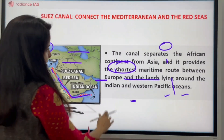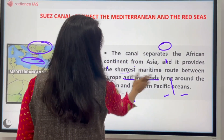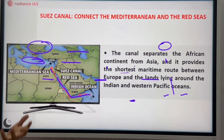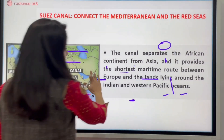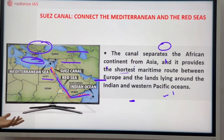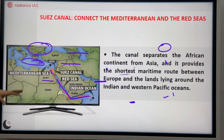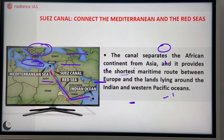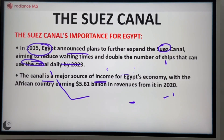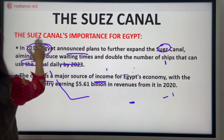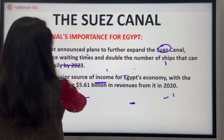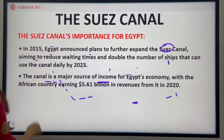The canal separates the African continent from the Asian continent, which basically provides the shortest marine route between Europe and the lands around the Indian and Western Pacific Ocean. This is a very prominent geopolitical implication. This implication is very important for Egypt, so if you have a little background you will see that in 2015...